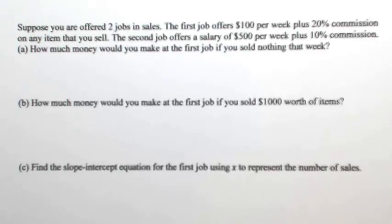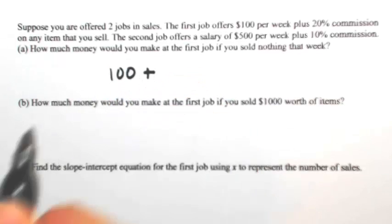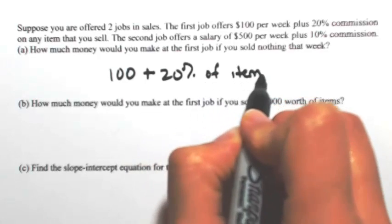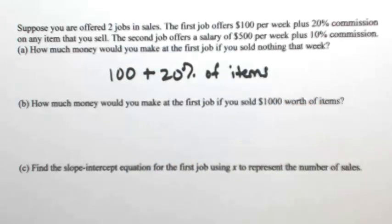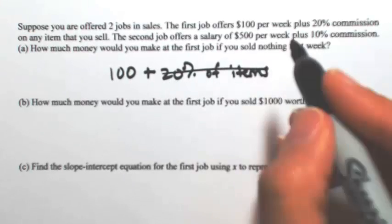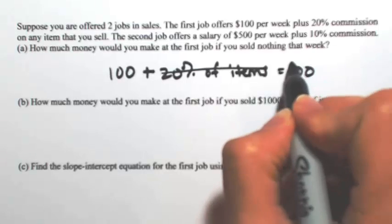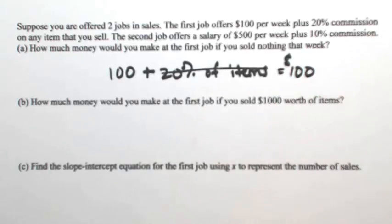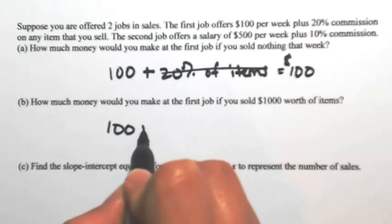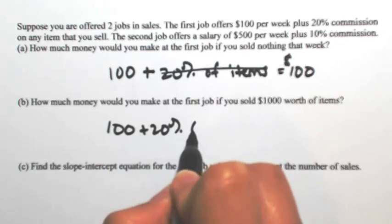How much money would you make at the first job if you sold absolutely nothing? The first job gives you $100, so you are going to have $100 plus 20% of the items sold. If you sell nothing, you are not going to make any commission whatsoever and you are just going to make your $100. Let's say you sold $1,000 — you are still going to make your $100 and then 20% of $1,000.